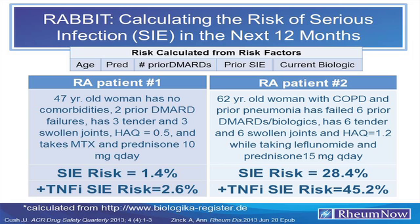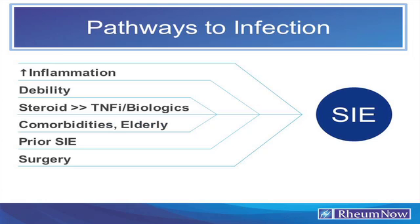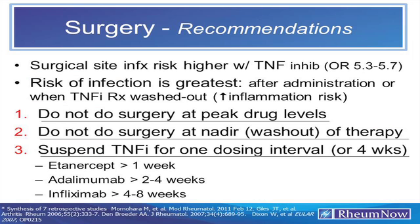The recipe for infection is clear: the higher the inflammatory load, the greater the risk. Debility adds significantly. Steroids are a major driver. TNF inhibitors could be a factor, but I think it's mainly the steroids. The evidence that DMARDs increase risk is scant to none, with the exception of cytotoxics and cyclosporine. Prior serious infectious events predict future ones. Surgery is also a risk factor.